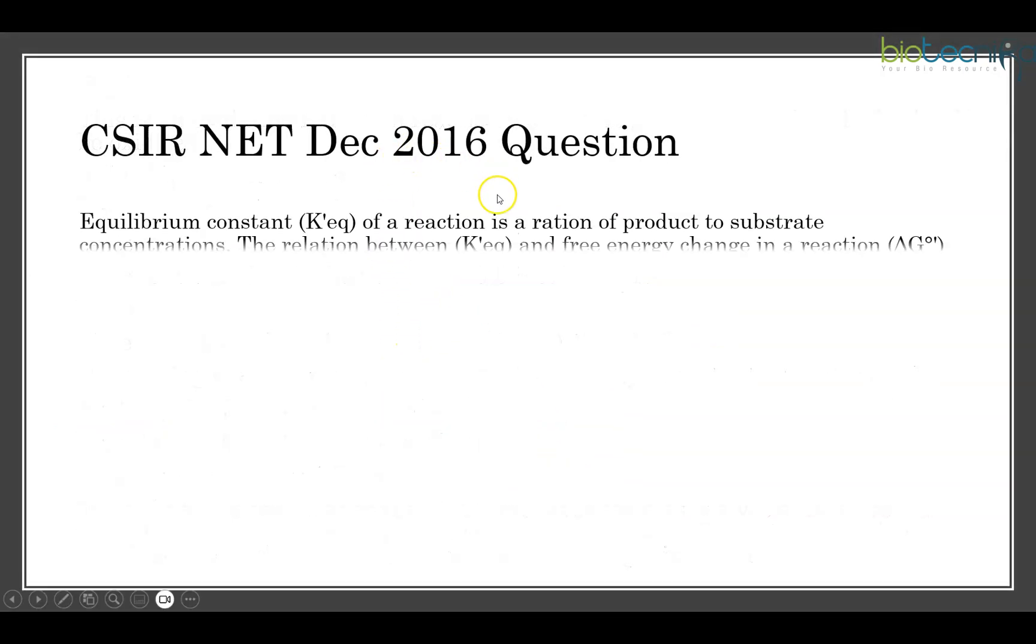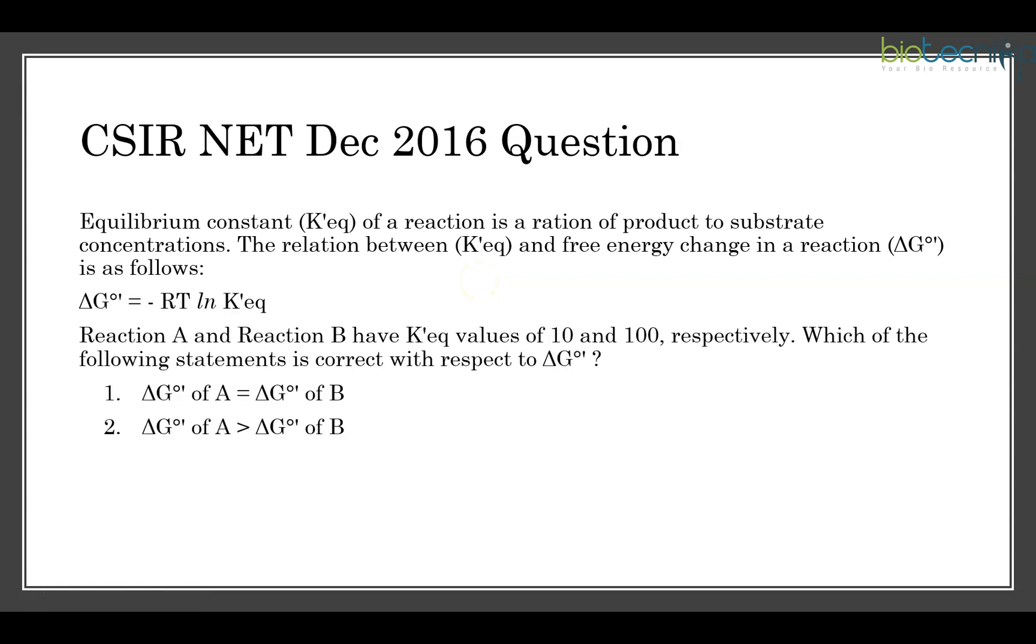Another question is from December 2016. So this is looking like a numerical question, but it is not. It is a theoretical question with the same concept that we have used. However, the equation is different, not related with Faraday's constant, but this is with relation of free energy and equilibrium constant, Keq. Here also, you have a negative sign, which means ΔG° and Keq equilibrium, they are inversely proportional. So reaction A and B, they have given reaction A and reaction B, they have two different Keq values. For one, it is 10. Another one, it is 100. So they are asking which of the following statements will be correct.